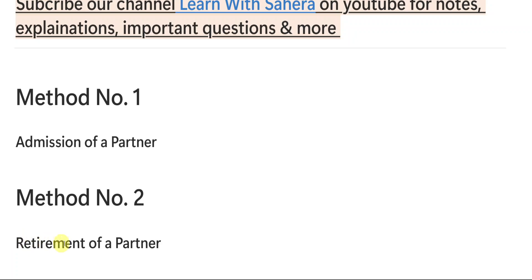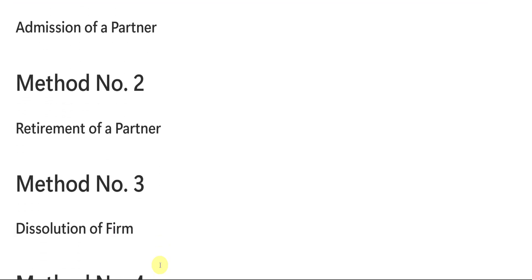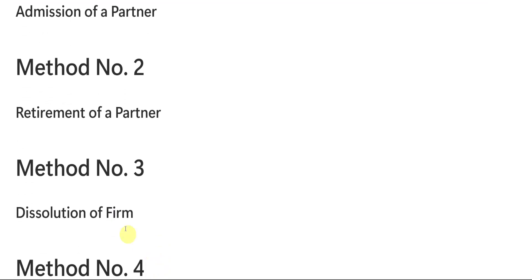Method number 2 is retirement of a partner. This is also one of the most important topics. These two topics are from unit number 1. If you are perfect with these two topics, definitely unit number 1 full marks will be in your hands.